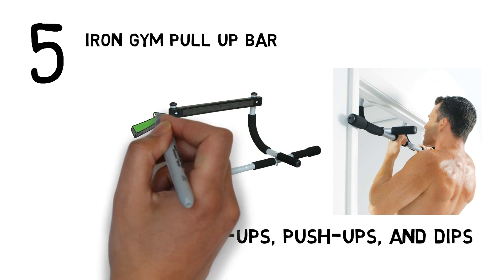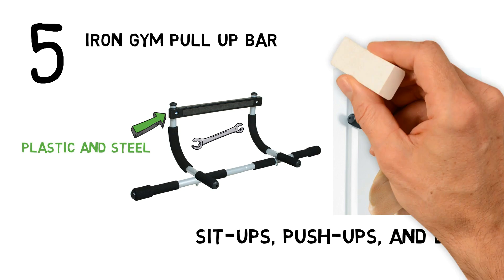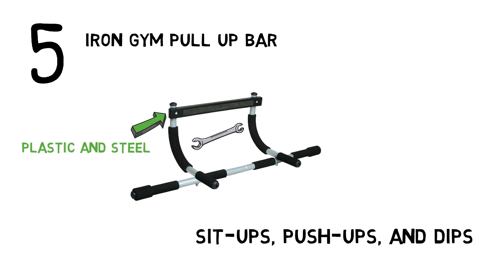The bar is made of a combination of plastic and steel, and it comes with everything you need to assemble the unit, including a hex open wrench. There are foam grips for standard and wide pull-ups.